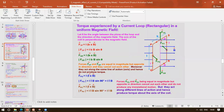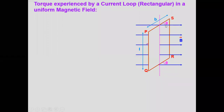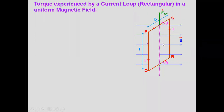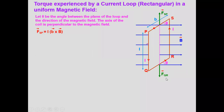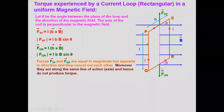Now let's spend one more month like this. Today we are studying how torque is experienced by a current loop in a uniform magnetic field. We have already calculated the force using the relation F = IL × B. The forces on the QR section and PS section were found — both are along the same line of action, so they produce no torque.